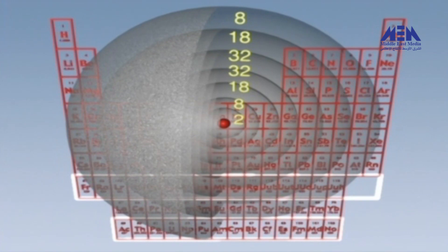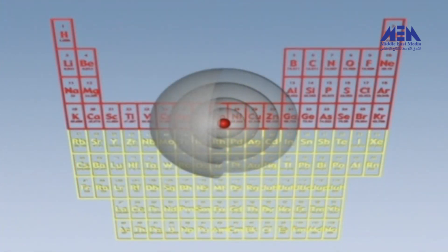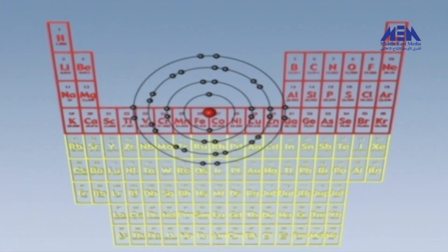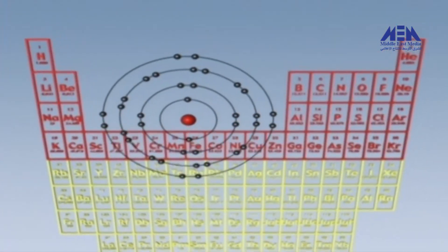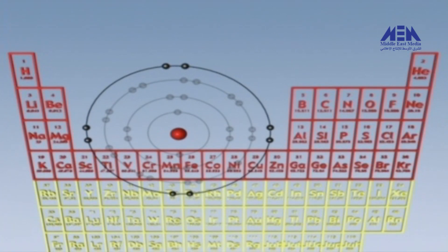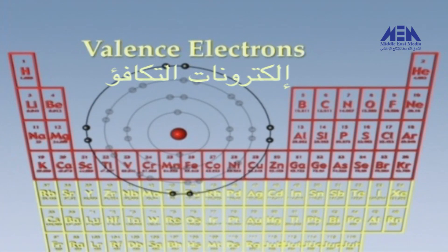Whether drawn as a set of fuzzy probability clouds or as more simplified Bohr-Rutherford diagrams, these representations of atoms contain significantly more detail than necessary to explore much chemical behavior. That's because the inner orbits of an atom do not contribute to the chemical reactions of the atom.